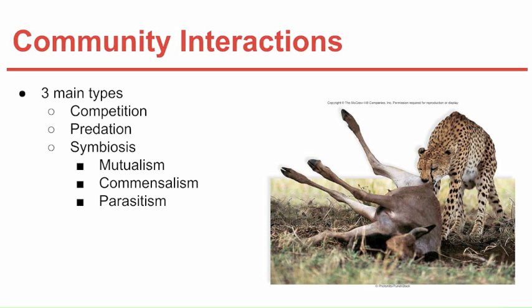Parasitism is when one organism lives on or inside another and harms it. The parasite — the organism living on the other organism — gets its nutrients, food, and everything it needs to survive from the host. This usually weakens but will not usually kill the host. An example of this would be a tick living on a dog or another mammal.